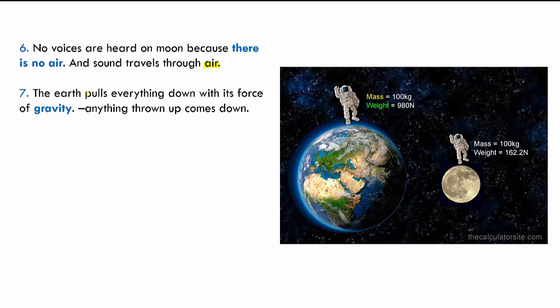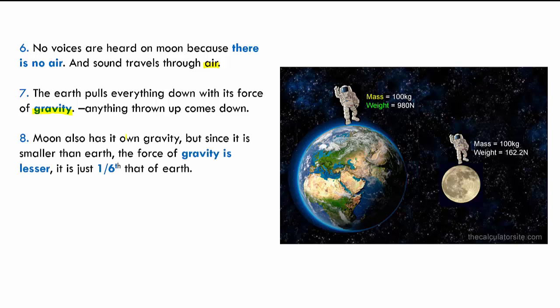The earth has its own force which is called the gravitational force, and because of this gravitational force it pulls everything towards itself. No matter what you throw up, it lands down because of earth's gravity. In the same way, our moon also has its own gravity. But since the moon is so much smaller than the earth, its gravitational force is a lot lesser — to be specific, it's just one sixth the force of gravity on earth.